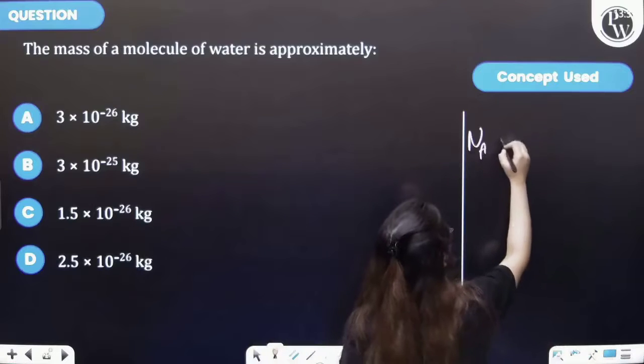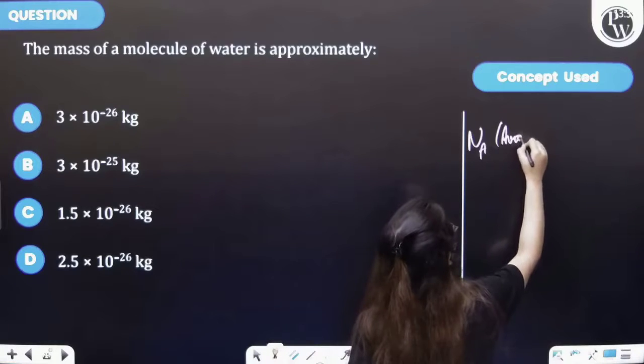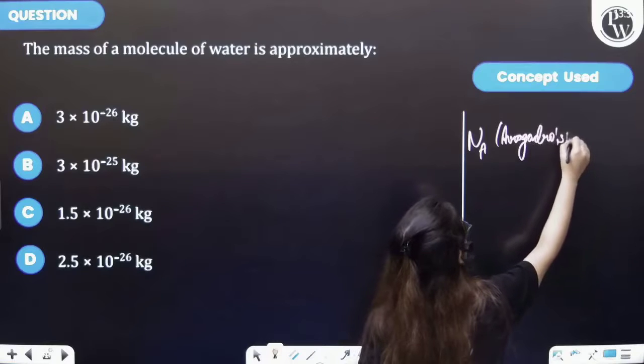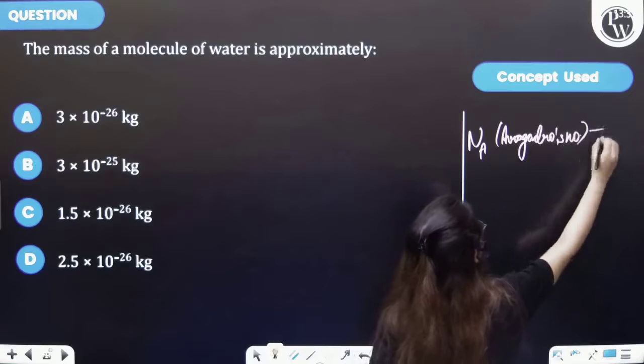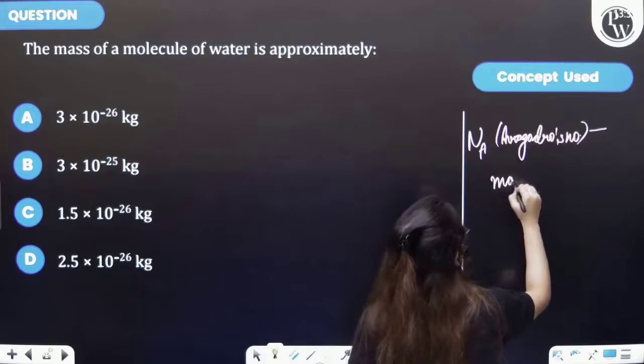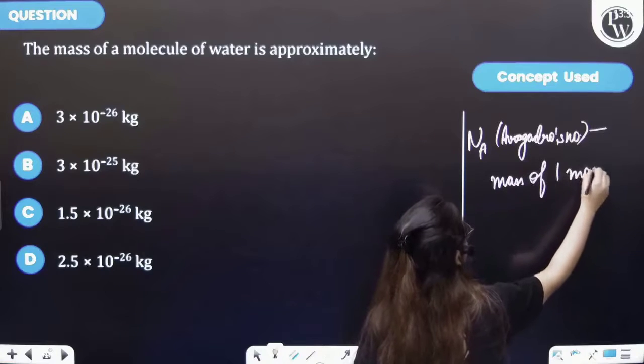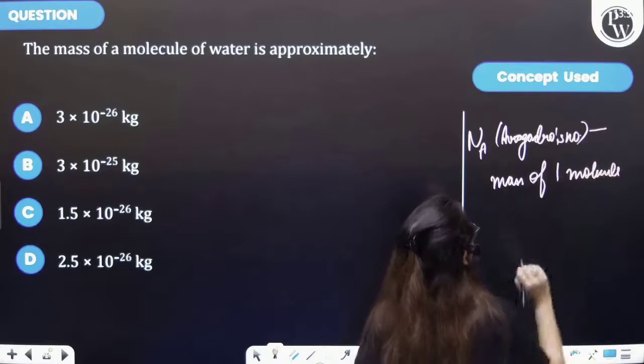Na, that is Avogadro's number, corresponds to mass of one molecule, right.